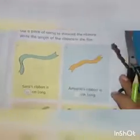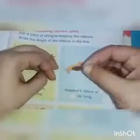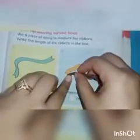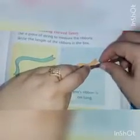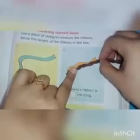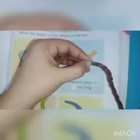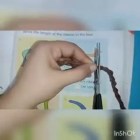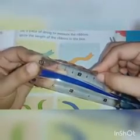Now go to the next one. Here we have another ribbon and we are going to measure it with the string. We put the edge of the string at the start of the ribbon and measure along it. Then we cut the string and measure this part against the scale, placing the edge at zero. We reach number 7. Amina's ribbon is 7 centimeters long.